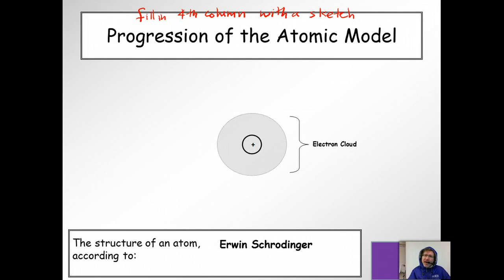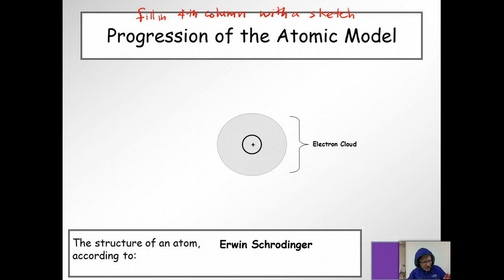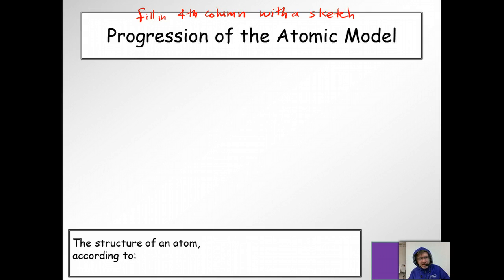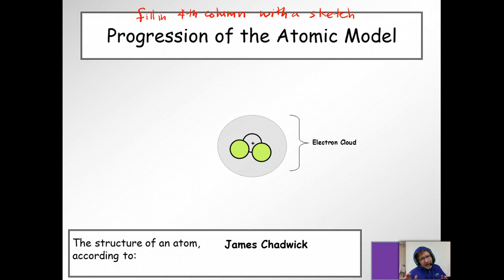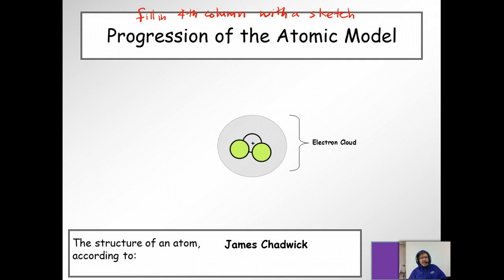Then Bohr says the electrons are in very specific spots — doing circles around this positive nucleus at very particular distances. If they jump back and forth, they make something called light. Then Schrödinger says, nope Bohr — you can't say you know exactly where they are. They are swarming around so fast and so crazily that they're a cloud, just this nebulous thing of electrons. But you still have a positive nucleus. And then Chadwick comes along and says: your nucleus has got positive charges — protons — and also these other things called neutrons, which have no charge. That is the progression of the atomic model. Give your worksheet to Mr. Weisenfeld with your name on it and you're good for today.